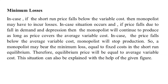The third condition is minimum losses. In the short run, if price falls below the variable cost, the monopolist may have to incur losses. If price falls due to a fall in demand or depression, the monopolist will continue to produce as long as the price covers the average variable cost. If the price falls below the average variable cost, the monopolist will stop production. A monopolist may bear a minimum loss equal to fixed cost in the short-run equilibrium. Therefore, the equilibrium price will be equal to average variable cost.